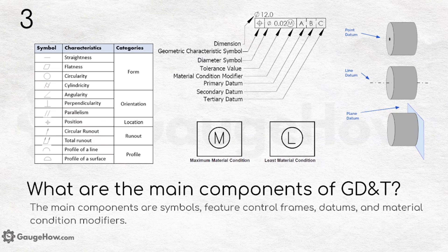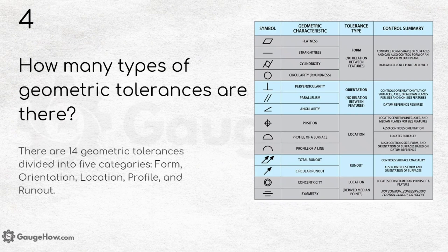The main components of GD&T are symbols, feature control frames, datums, and material condition modifiers. If you check the list, symbols are given with their characteristics and the categories in which they are divided. There are 14 geometric tolerances divided into five categories: form, orientation, location, profile, and run-out.